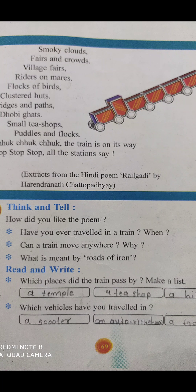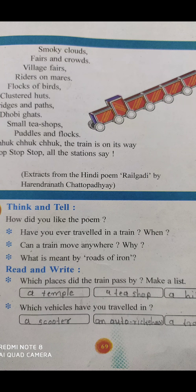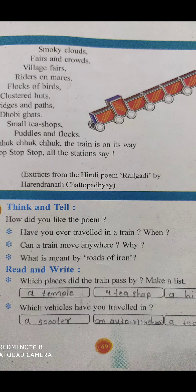Second question — can a train move anywhere and why? Here, a train has its own path or track. Train can only go on its own way, which is its iron track. Train cannot go everywhere — it can only go where rail tracks are laid. Next question — what is meant by road of iron? Road of iron means the rail tracks on which a train moves. It is made of iron, so it is called road of iron.